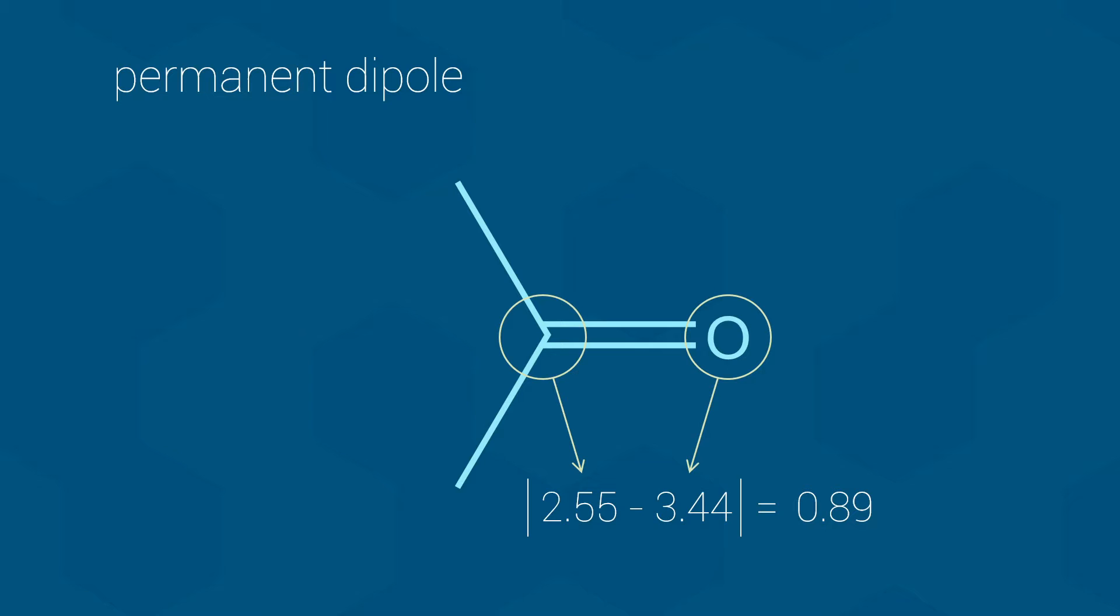In other words, this double bond has two poles, one partially positive and the other partially negative. And since the partial charges are fixed on the atoms, the acetone molecule has a permanent dipole.